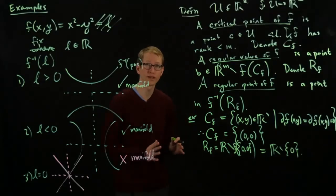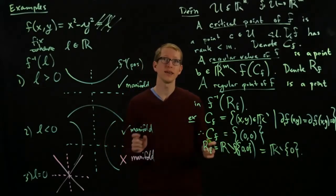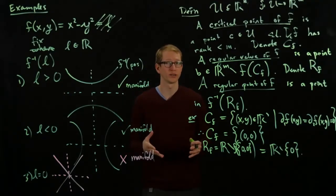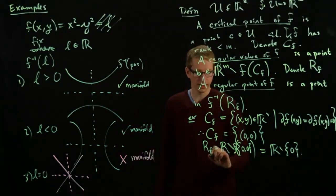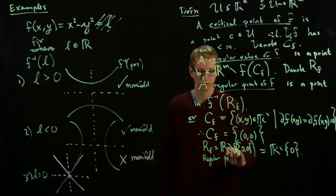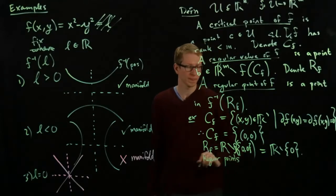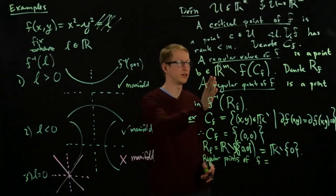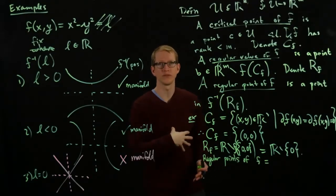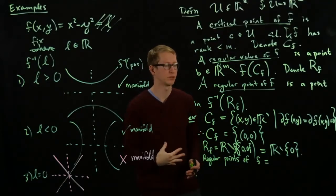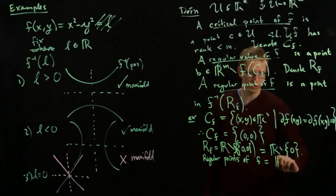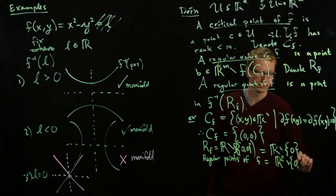And finally, the set of regular points, I didn't give a notation for this, but the set of regular points of f is equal to, it's going to be, let's see, regular points is the inverse image of the set of regular values, and that's actually everything except the origin. So that's just going to be r2 except the point 0, 0.